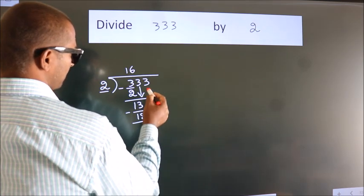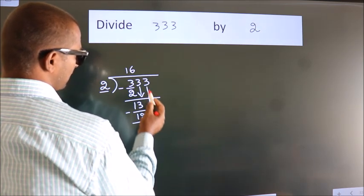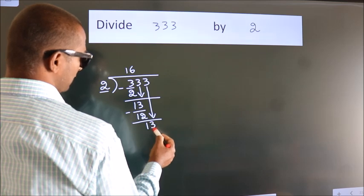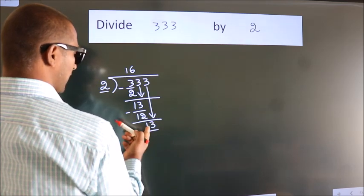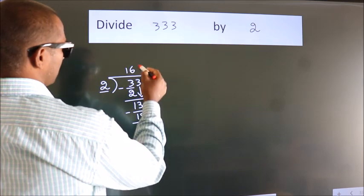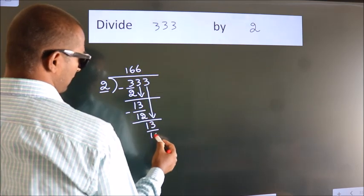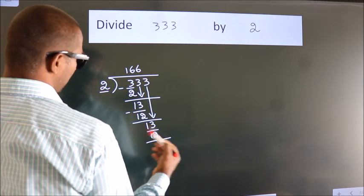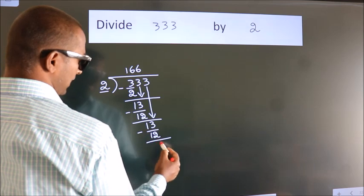After this, bring down the beside number. So, 3 down. So, 13. A number close to 13 in the 2 table is 2, 6, 12. Now, we subtract. We get 1.